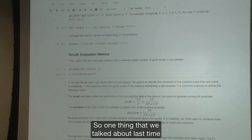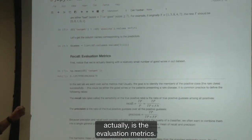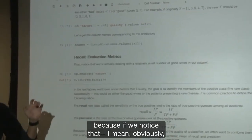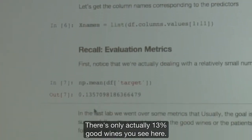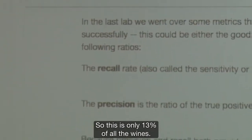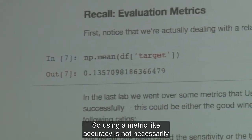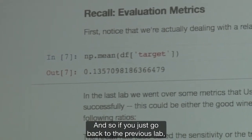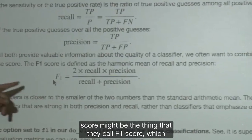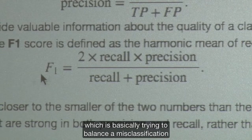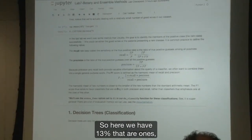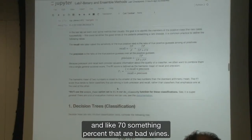One thing that we talked about last time is the evaluation metrics. If we notice, there are very few good wines. There's only actually 13% good wines. So using a metric like accuracy is not necessarily going to be the best thing to do here. Actually a better score might be the F1 score, which is the harmonic mean of recall and precision, which is basically trying to balance misclassification when you have unbalanced outcomes.